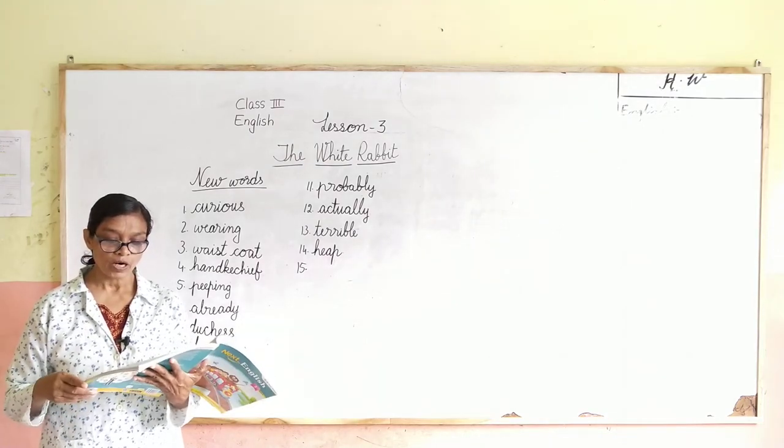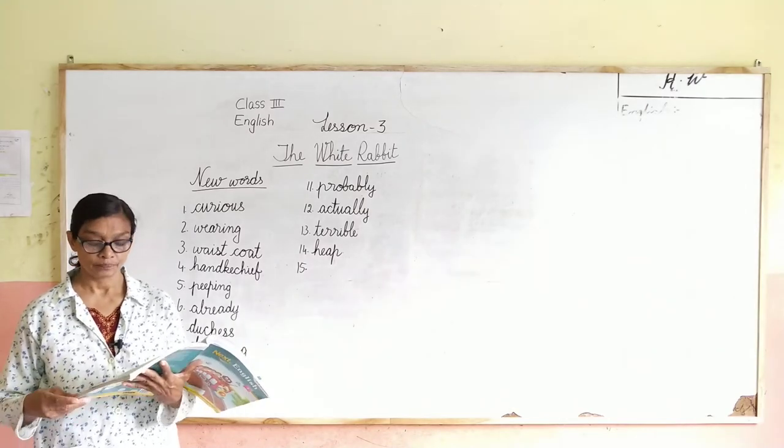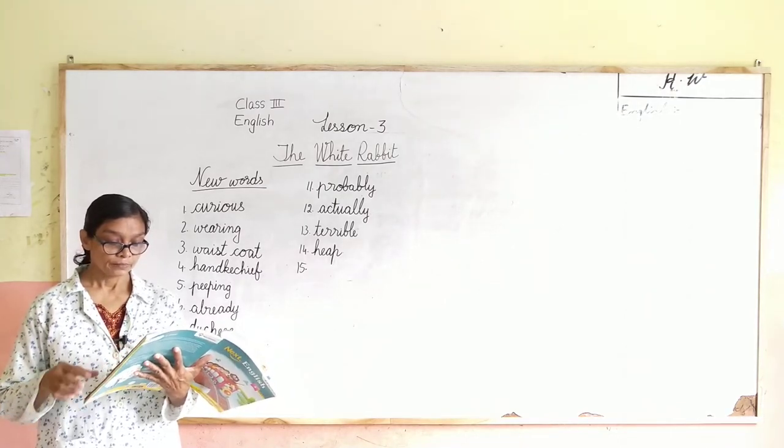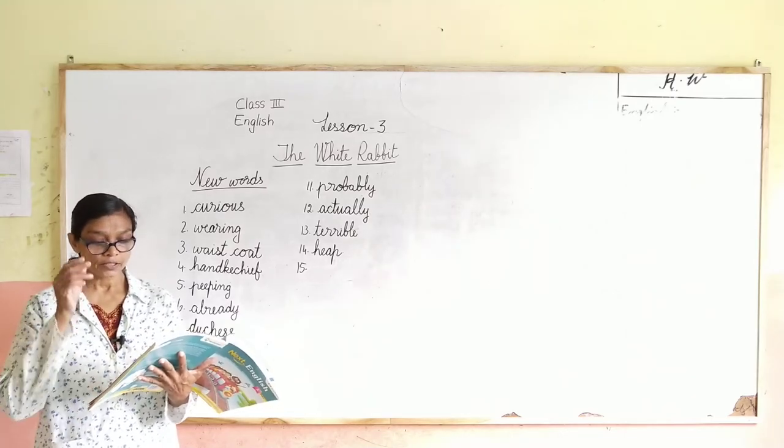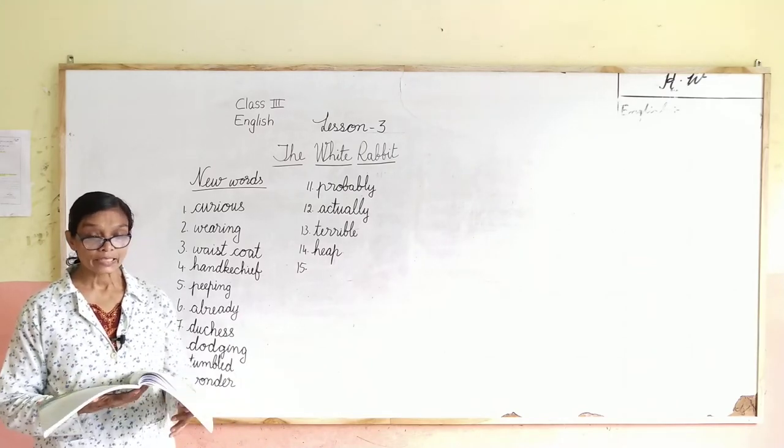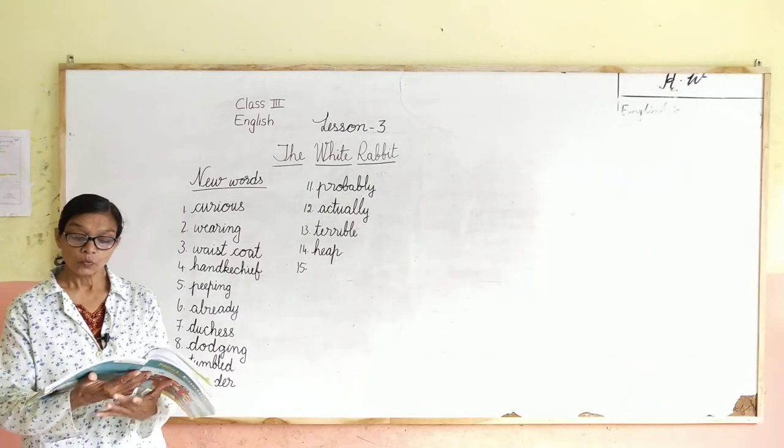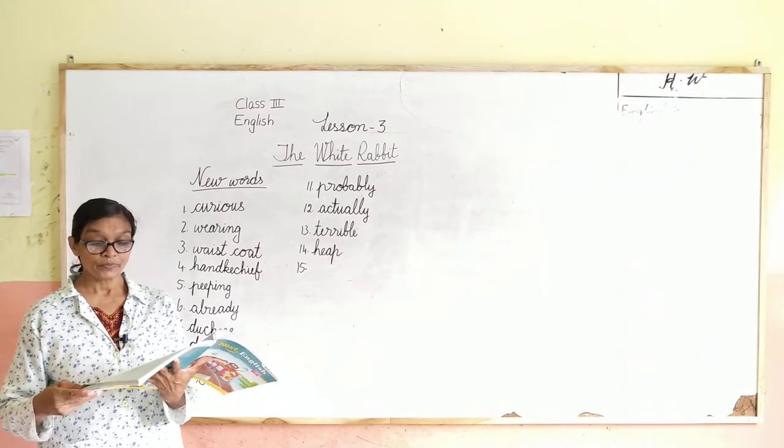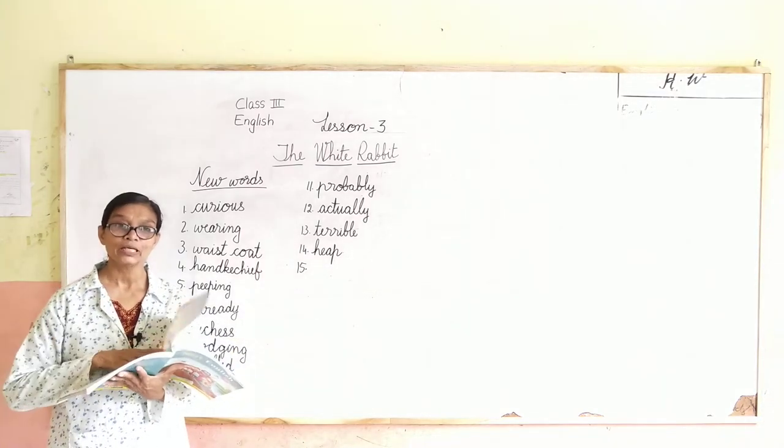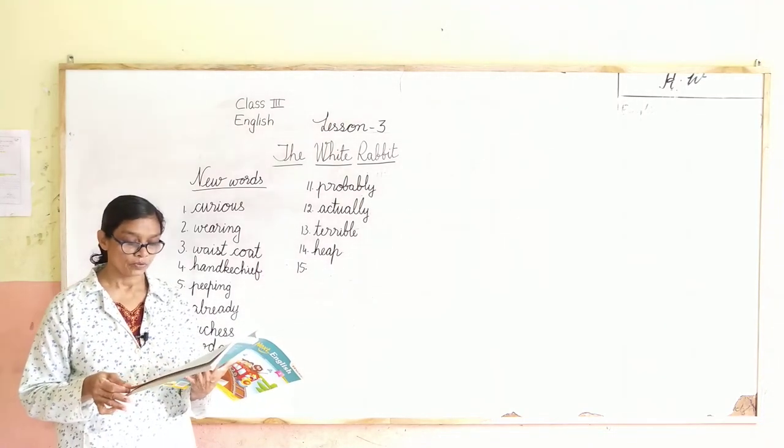Alice wanted to see what would happen to it. Alice aisa socha, yeh rabbit ko kya hoga? She ran and ran till she tumbled right down a rabbit hole. Alice aisa bhi kya kiya? Bohut jaldi se bhaagna lagi. Woh rabbit ke piche hai. Aur jab tak woh yeh rabbit hole mein gir gaya, tab tak woh bhaagti rakti hai.